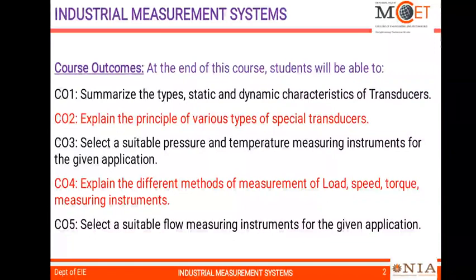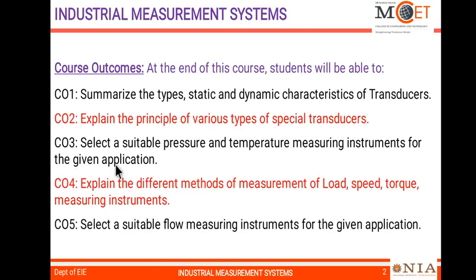The Industrial Measurement Systems course focuses on five course outcomes. Course Outcome 1: summarize the types of static and dynamic characteristics of transducers. Course Outcome 2: explain the principle of various types of special transducers. Course Outcome 3: select suitable pressure and temperature measuring instruments for a given application. Course Outcome 4: explain different methods of measurement of load, speed, and torque. Course Outcome 5: select a suitable flow measuring instrument for the given application.